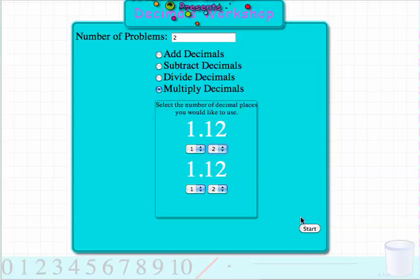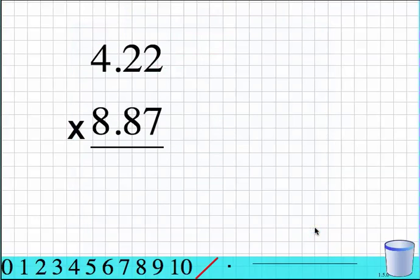So we're going to do a large multiplication problem. Click Start. So here's my first problem: 4.22 times 8.87.